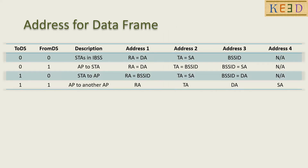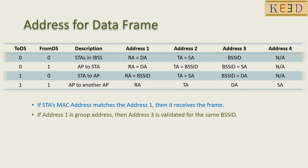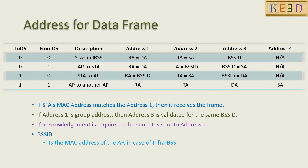We have already gone through the address fields for data frames in different scenarios. If the MAC address of the station matches address 1, then it receives the frame. If address 1 is a group address, then address 3 is validated for the BSS ID of the BSS. If a response is required, it is sent to address 2. In infrastructure BSS, the BSS ID equals the MAC address of the AP. In IBSS, the BSS ID is randomly generated.